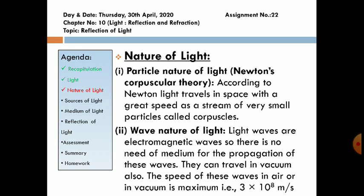First of all, particle nature of light. According to Newton, light travels in space with great speed as a stream of very small particles called corpuscles. These corpuscles travel back to back. That means light travels in a straight line.